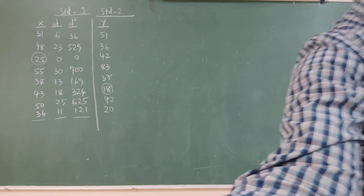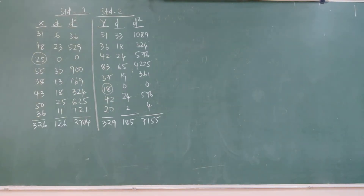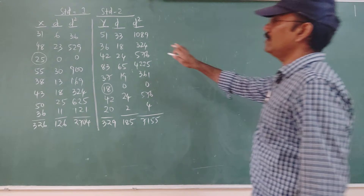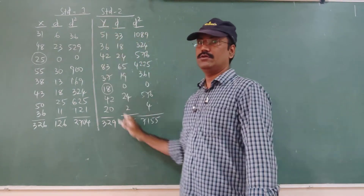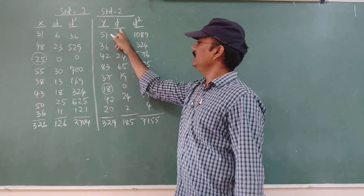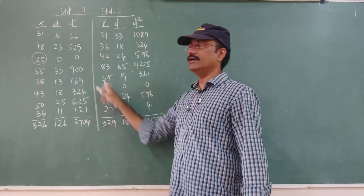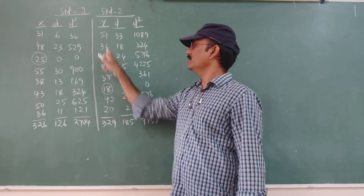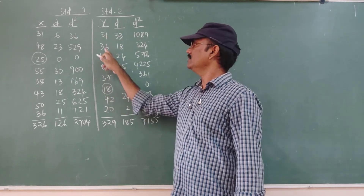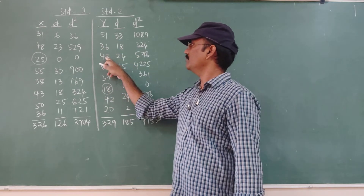So using the smallest number 18, find the D values by subtracting 18 from all Y values. 51 minus 18 = 33, 36 minus 18 = 18.